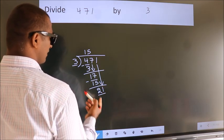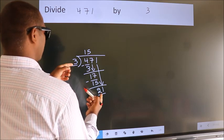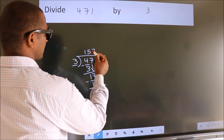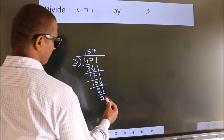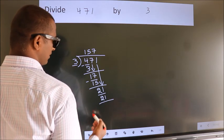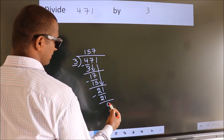So, 21. When do we get 21? In 3 table. 3 7s 21. Now, we subtract. We get 0.